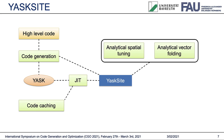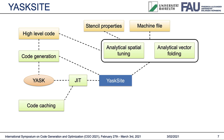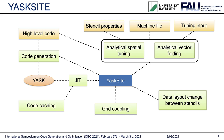YASKSite uses analytical tuning based on performance models. This tuning requires information about the code which is extracted from the high-level code and user-specified stencil properties like the shape and radius of the stencil. For performance modeling, it also requires information about the hardware, which is specified using a machine file. The final input to analytical tuning is the tuning option specified by the user, like which cache to aim for in spatial blocking. Additional support features include grid coupling and the ability to change the data layout between stencil computations. The main feature, however, is the analytical performance model and tuning.